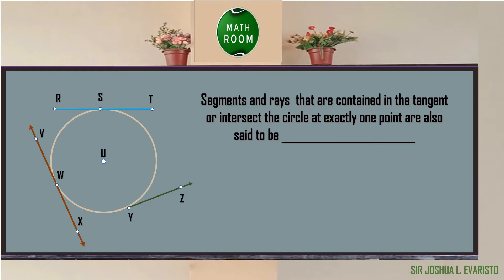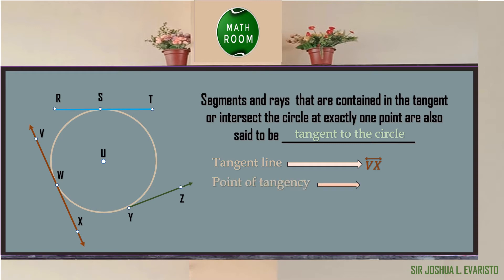Segments and rays that are contained in the tangent or intersect the circle at exactly one point are also said to be tangent to the circle. In the given figure, we have one tangent line, which is line VX, the red line. But we have three points of tangency: point W, point Y, and point S. Because we have three tangents to the circle: line VX, ray YZ, which is green, and segment RT, which is blue.